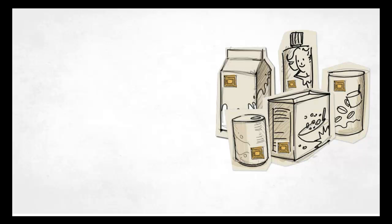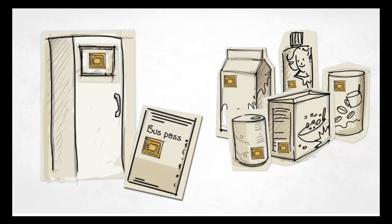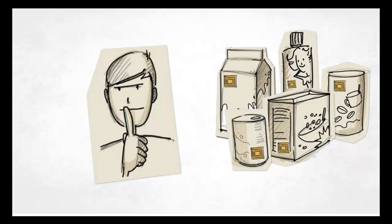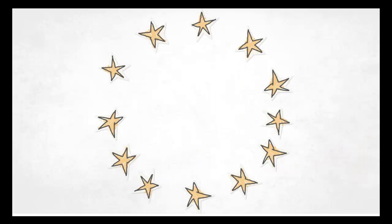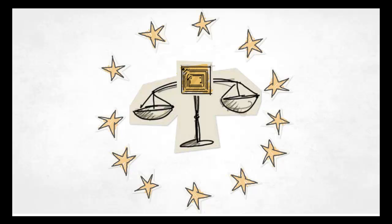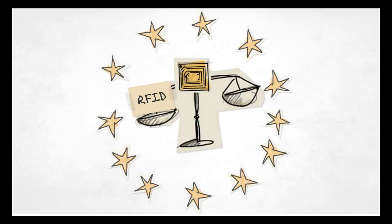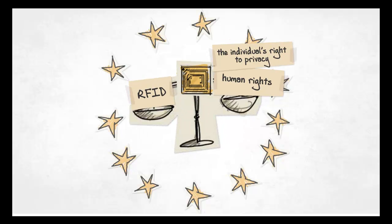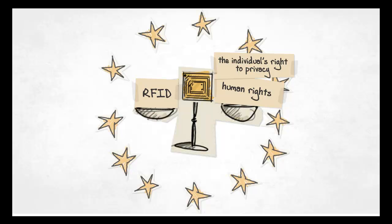RFIDs can be integrated into almost any everyday object, from fridges to bus passes. The fact that these devices can be read, updated and tracked has raised privacy concerns. The European Union is therefore developing legislation to ensure that the use of RFID never compromises basic human rights and the individual's right to privacy.